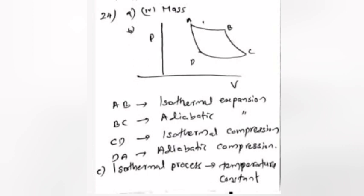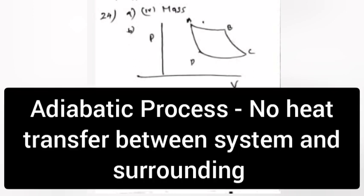The Carnot cycle consists of: (A-B) Isothermal expansion, (B-C) Adiabatic expansion, (C-D) Isothermal compression, and (D-A) Adiabatic compression. Isothermal process: temperature constant. Adiabatic process: no heat transfer between system and surrounding.